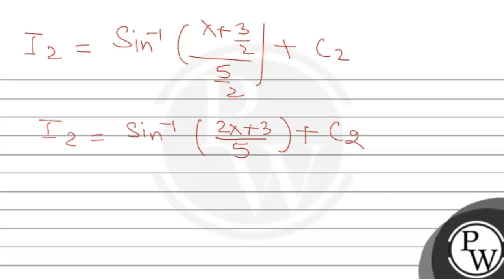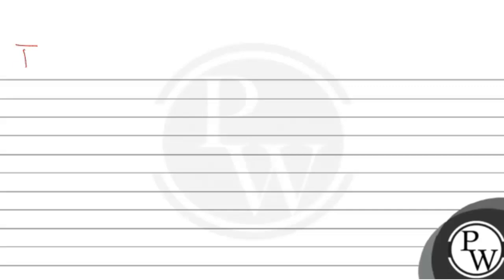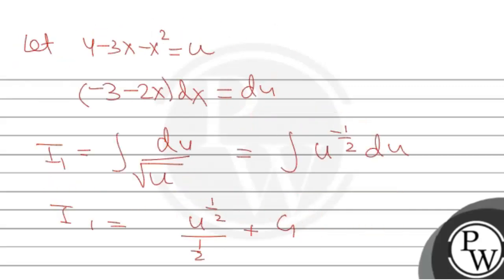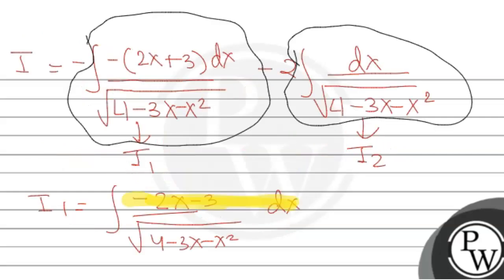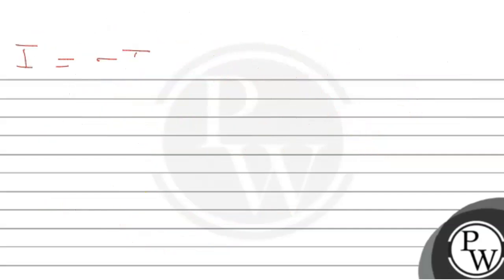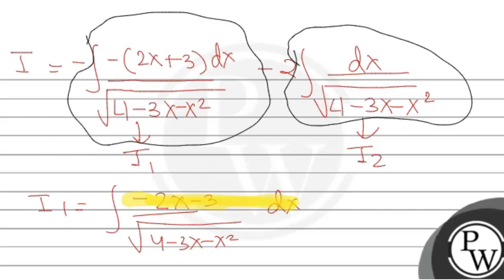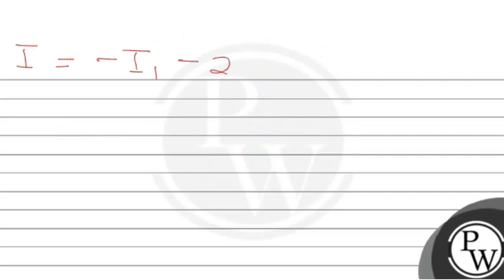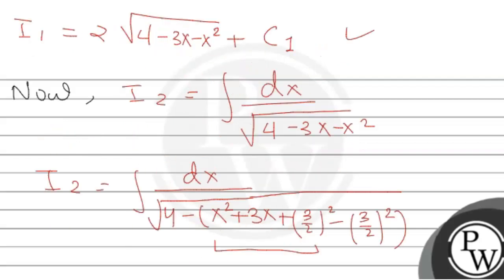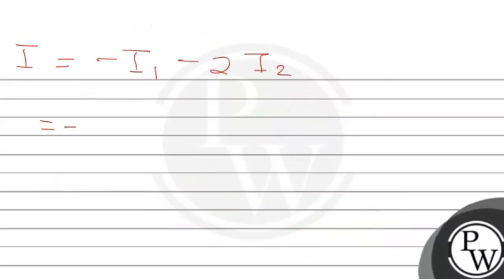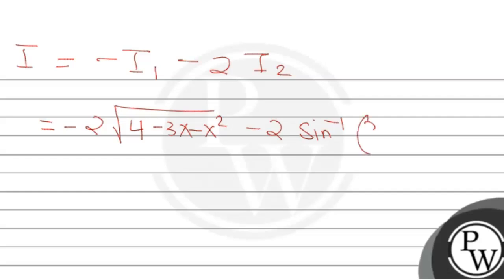We need to find the full integral I. Recall that I = I1 minus 2 times I2. Substituting our results: I = 2√(4 - 3x - x²) minus 2·sin⁻¹[(2x + 3)/5] + C, where C combines all constants of integration (C1 and C2). I hope you understood this question. Thank you so much.